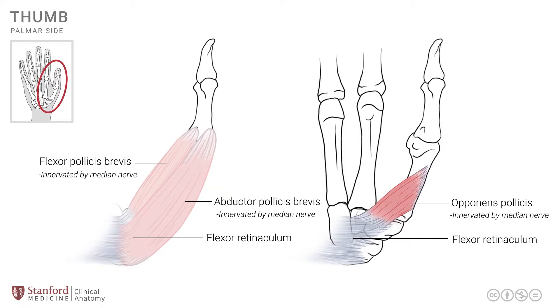The opponens pollicis is not visible in a superficial dissection and has to be exposed by either removing or cutting away the superficial muscles of the thenar group.